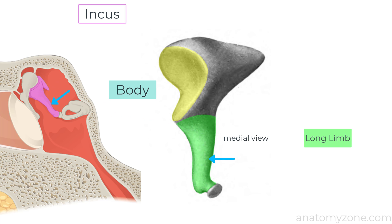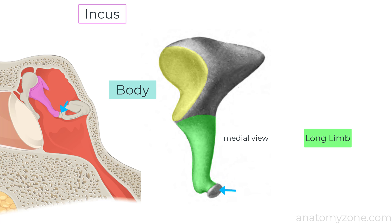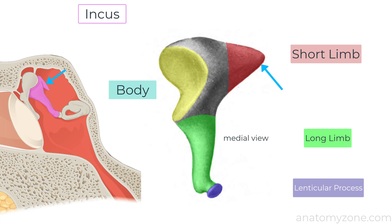The long limb extends inferiorly from the body running in parallel to the handle of the malleus. Distally it curves medially to articulate with the stapes at the incudostapedial joint via a small ovoid process known as the lenticular process. The short limb extends posteriorly attaching the incus to the posterior wall of the middle ear.